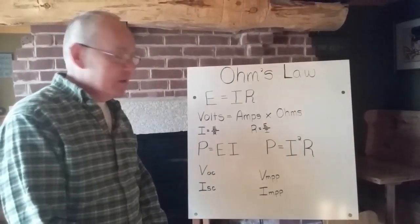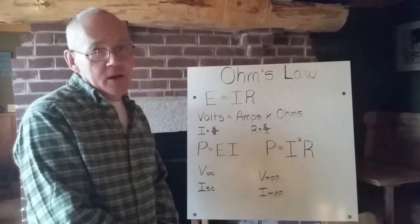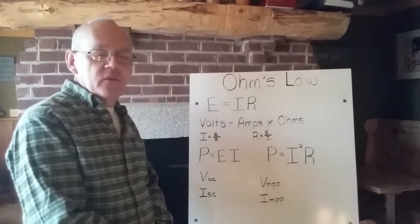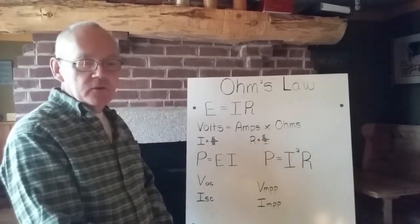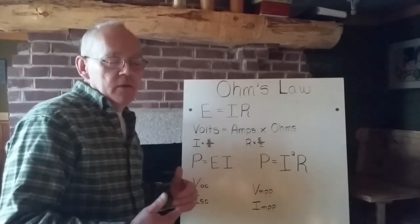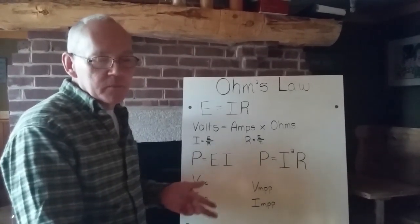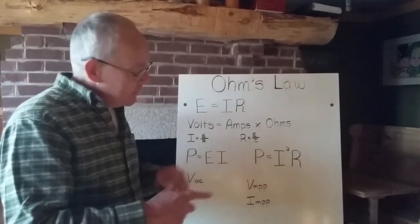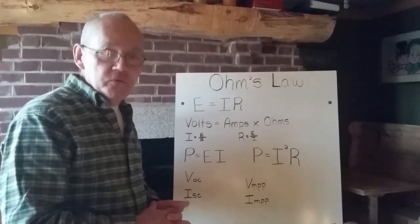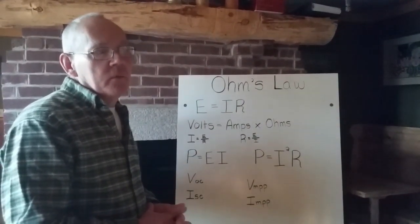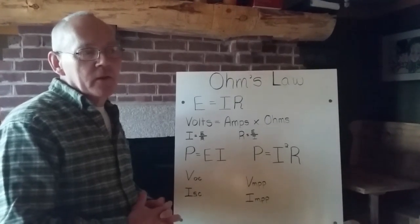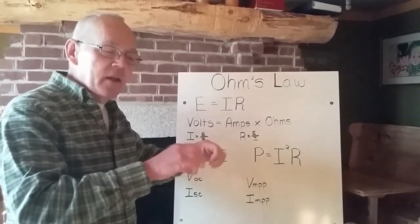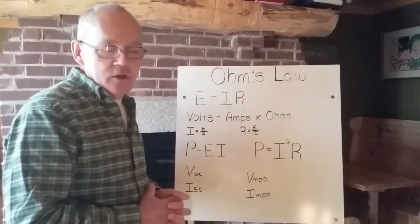But it gets even more complicated than that because the maximum power point moves around. It depends on just how sunny it is. It's in one place under the test conditions. That maximum power point is going to be in a different place at different voltage, different current when it's partly cloudy and it's going to be in yet a different place when it's really cloudy and all over the place in between those extremes. And this is what a maximum power point controller does for you. It measures the amount of voltage and current coming from your panel and adjusts them to put it back on the maximum power point and bring every last watt out of the sunshine that it can.